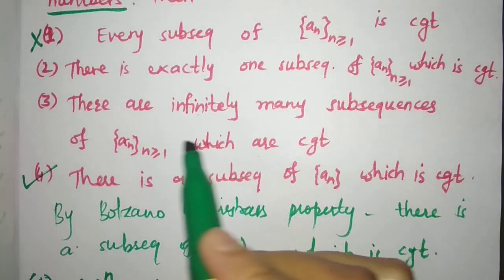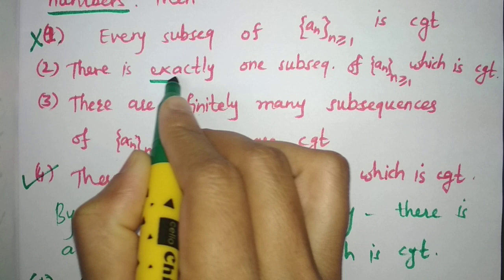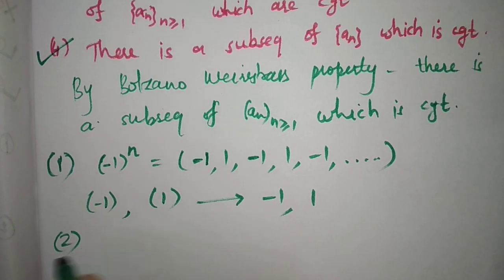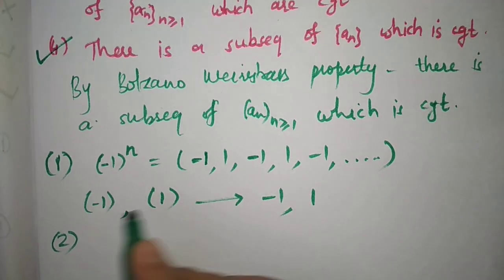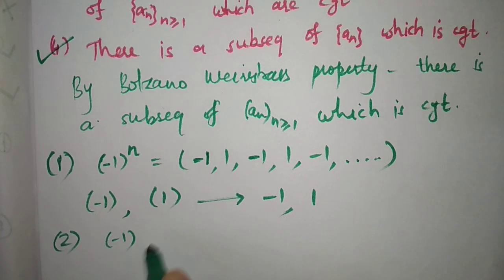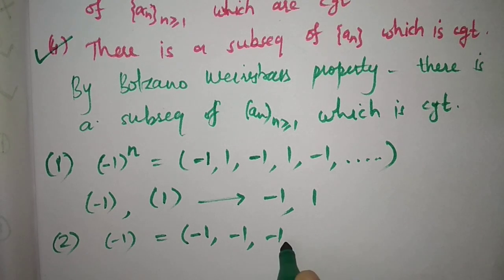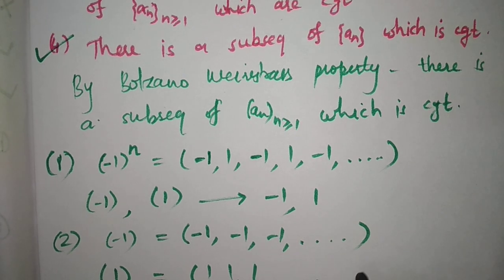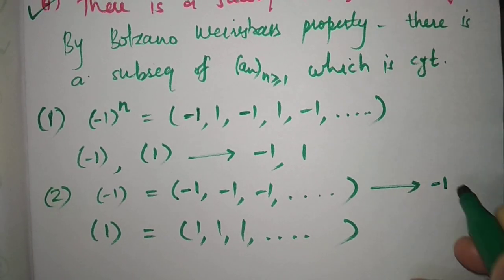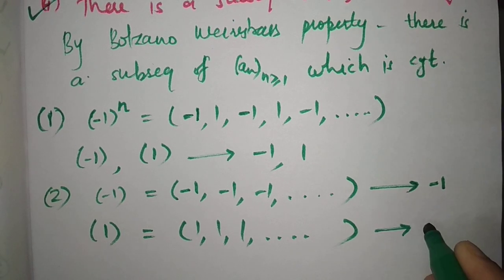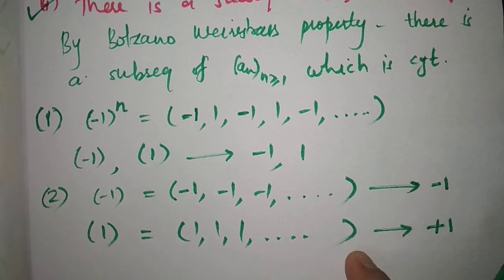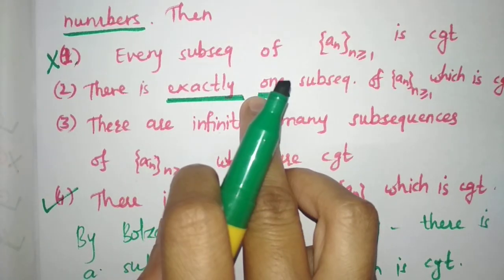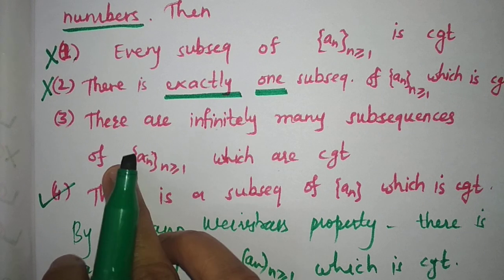The second option says there is exactly one subsequence of a_n which is convergent. This is also false. Using the same example of (-1)^n, there are two convergent subsequences: the constant subsequence -1, -1, -1, ... which converges to -1, and the constant subsequence 1, 1, 1, ... which converges to +1. So there are at least two convergent subsequences, meaning option 2 is false.